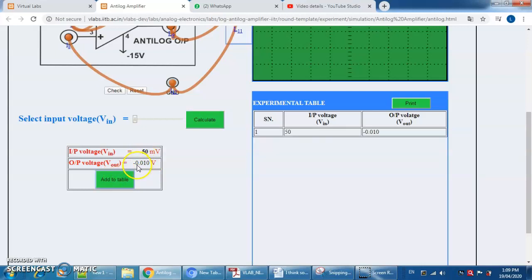For 50 millivolts it is showing me minus 0.10 volt. If I increase to 100 millivolts it will show me the rapid or more reading as compared to the log amplifier. It will give higher rating.